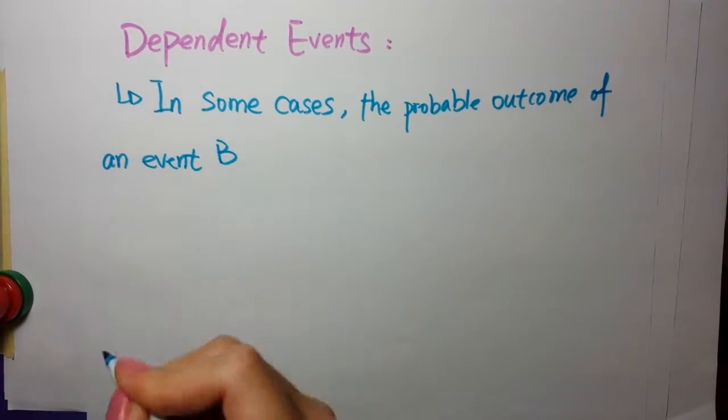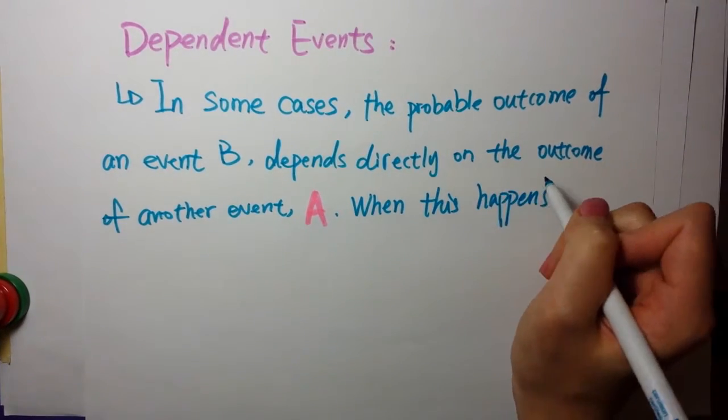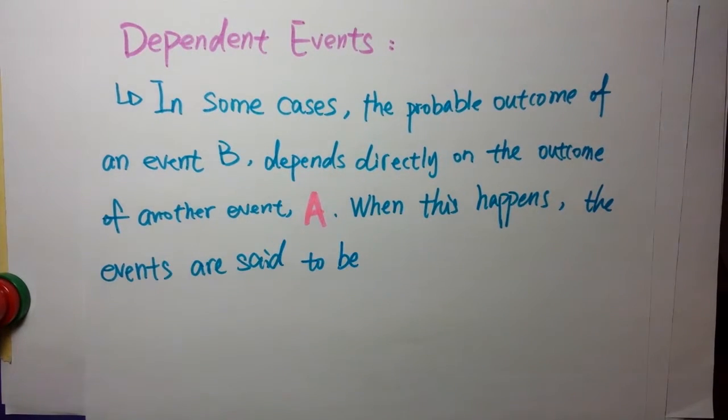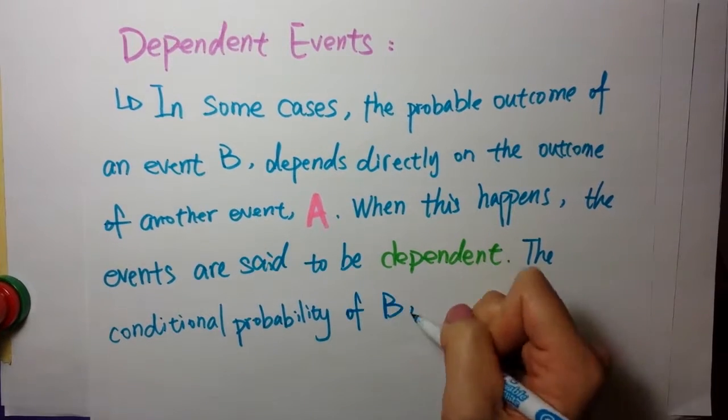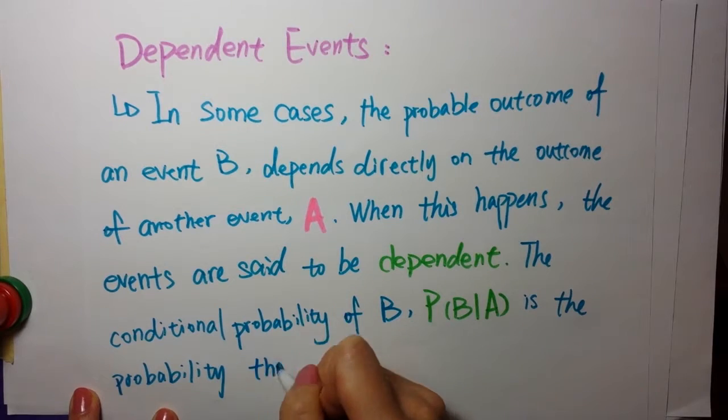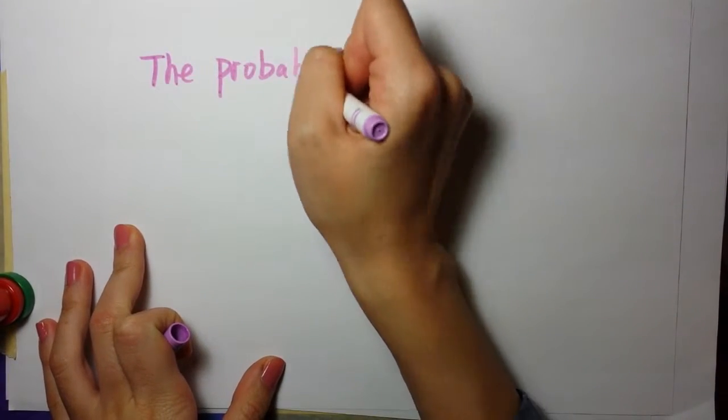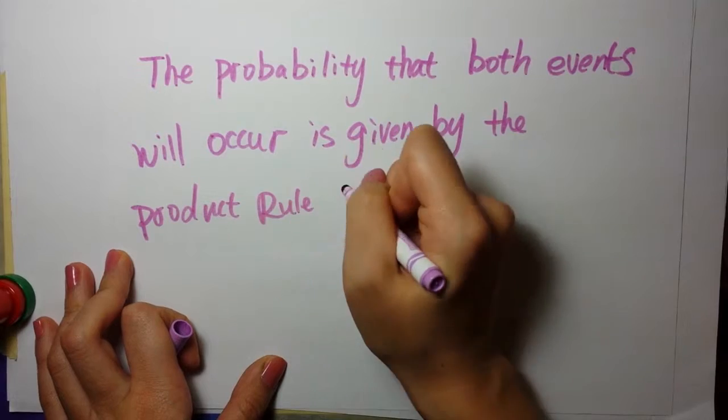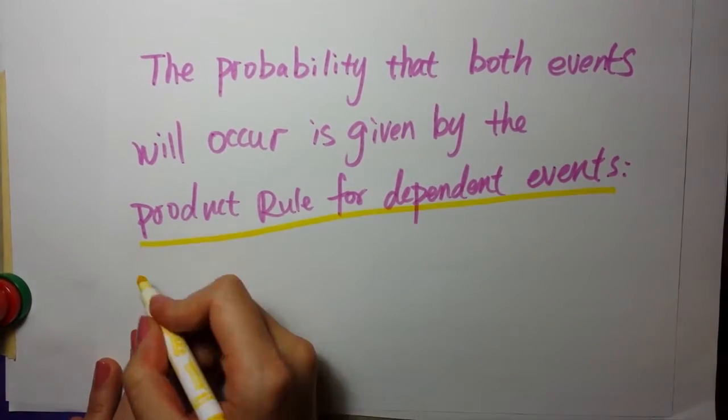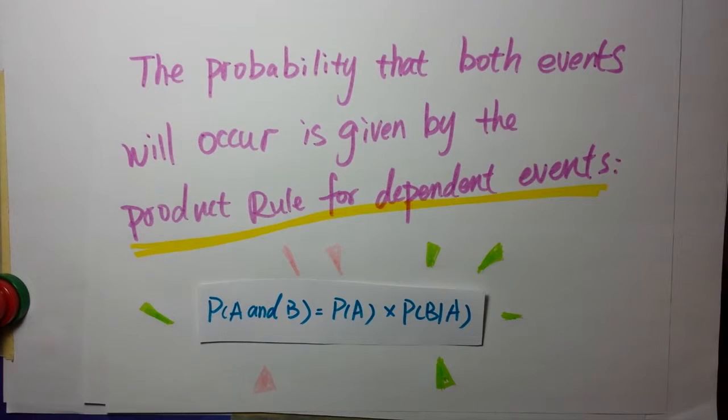So what are dependent events then? In some cases, the probable outcome of an event B depends directly on the outcome of another event A. When this happens, the events are said to be dependent. The conditional probability of B is the probability that B occurs given that A has already occurred. Thus, the probability that both events will occur is given by the product rule for dependent events. The probability that both A and B will occur equals the probability of A times the probability of B given that A has occurred.